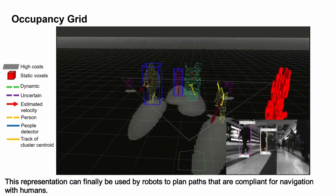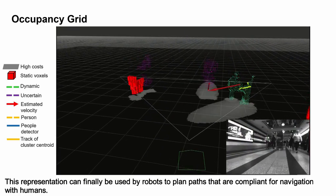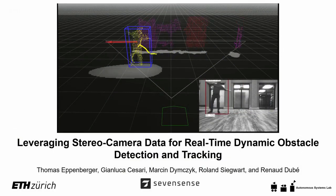This representation can finally be used by robots to plan paths that are compliant for navigation with humans. Thanks for watching.